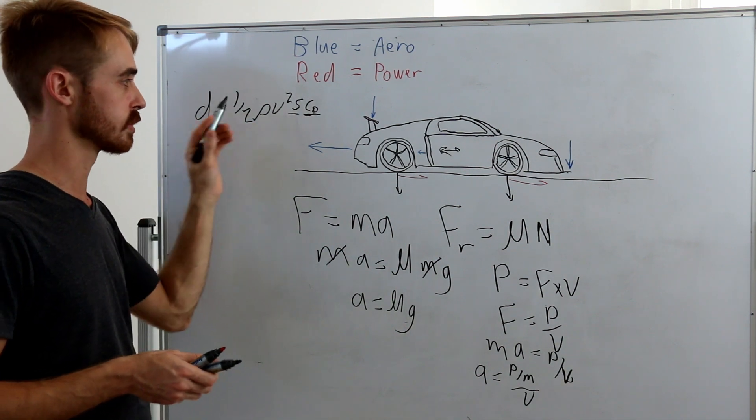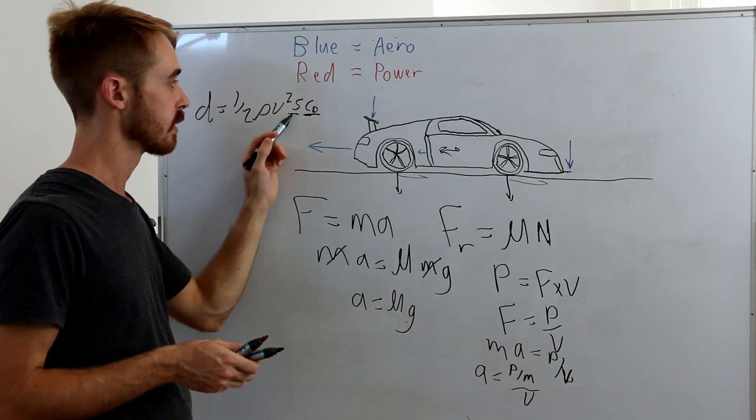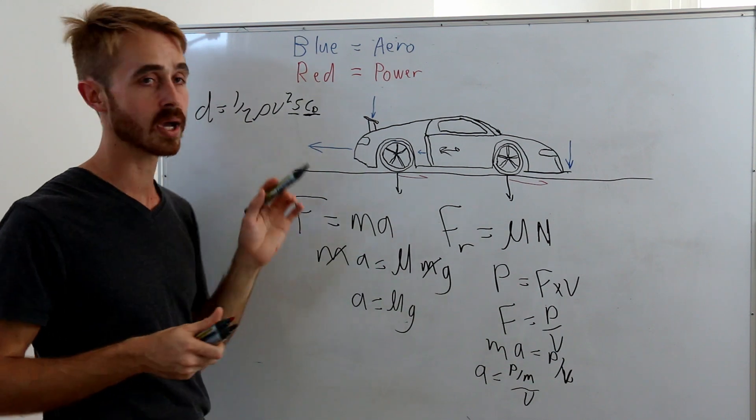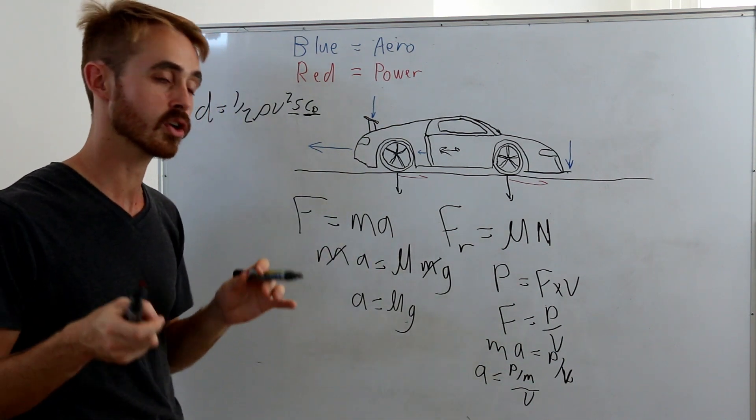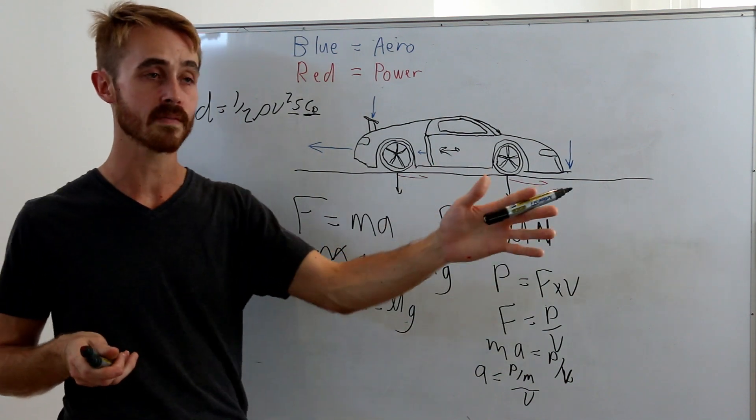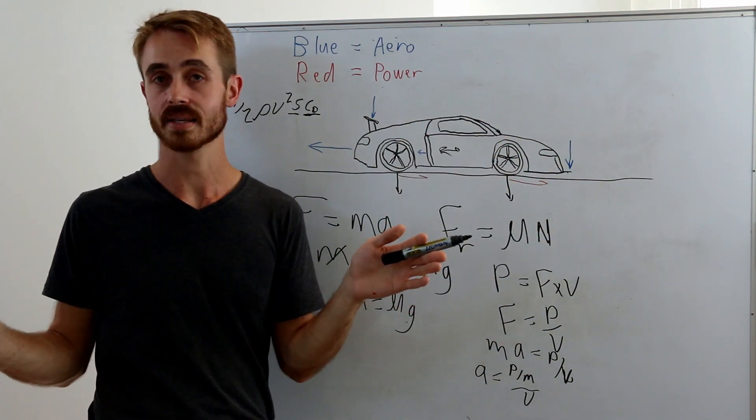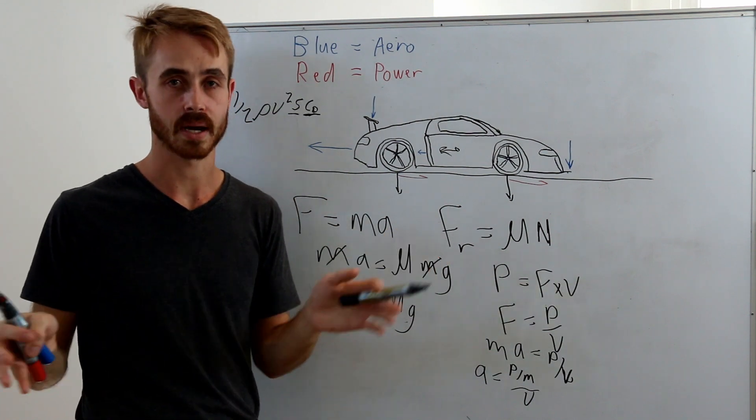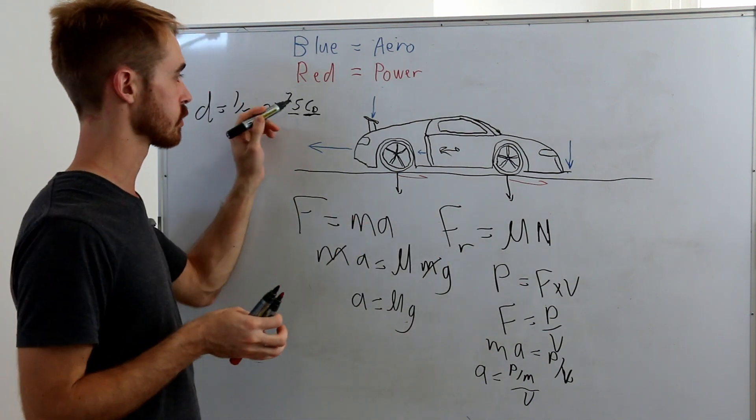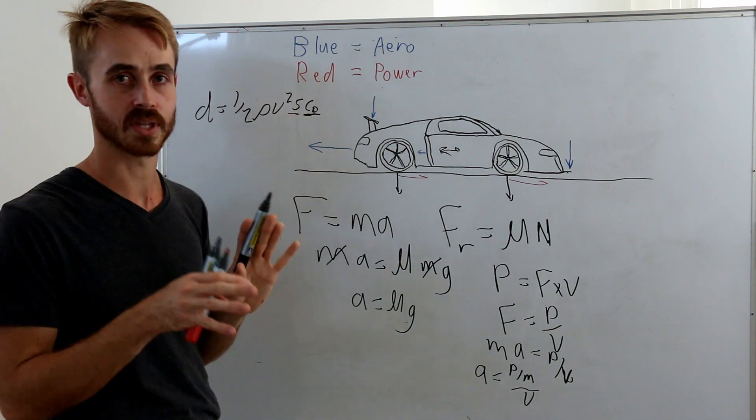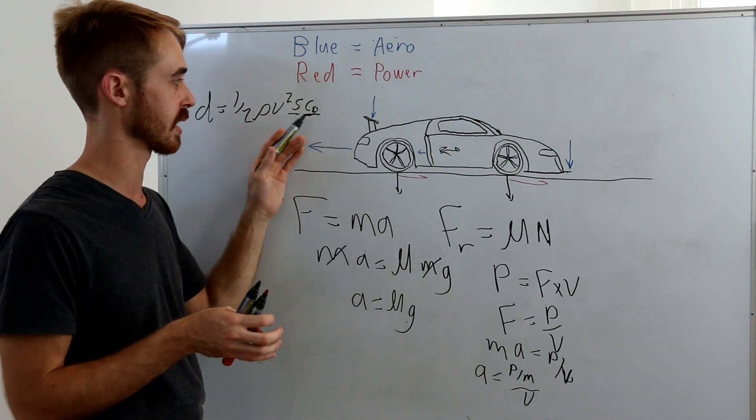What these terms are: the coefficient of drag cD and the frontal area S. These ones are related to velocity, so let's not worry about that. If we're comparing between two cars, they're going to be of similar size even if you increase the power. If you have a 2000 kg, 1000 hp car and a 1000 kg, 500 hp car, they're going to be about the same frontal area, so let's ignore the S term because they're going to be the same for comparison.